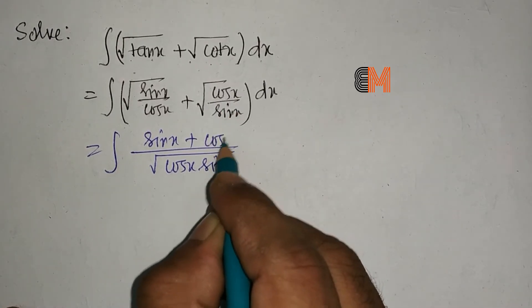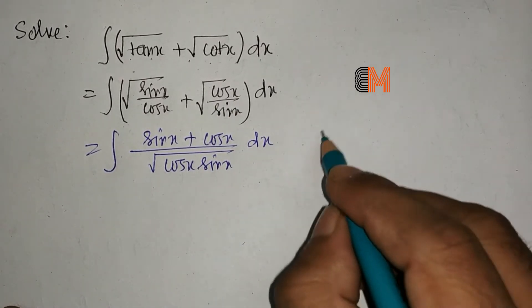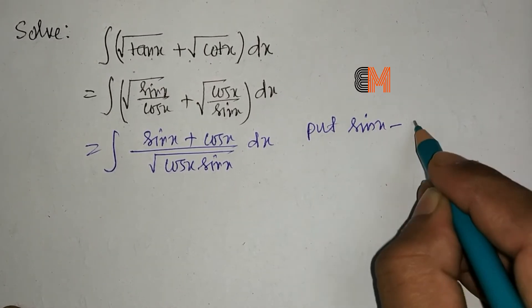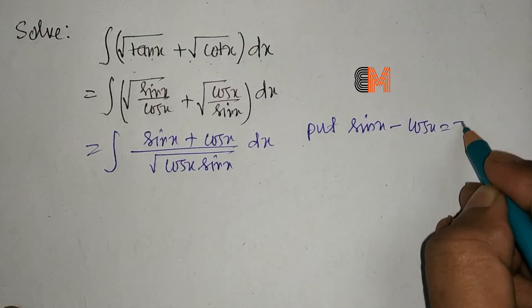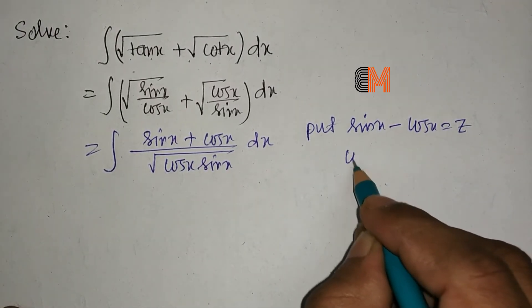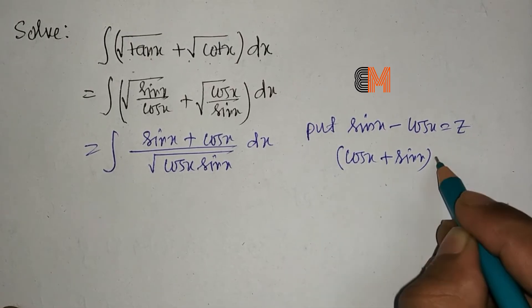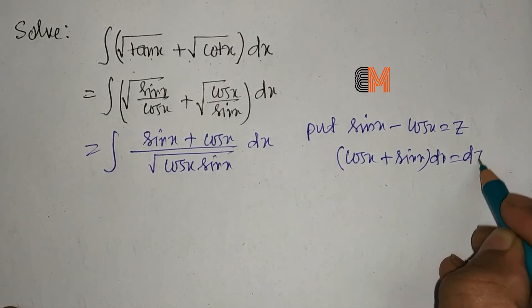Now put sinx - cosx = z, which means (cosx + sinx)dx = dz.